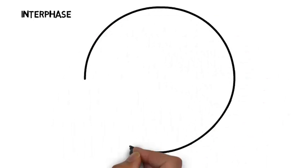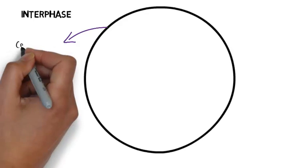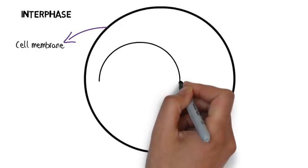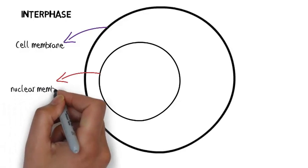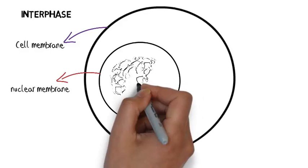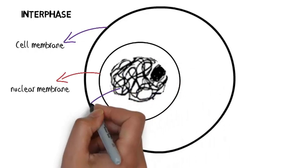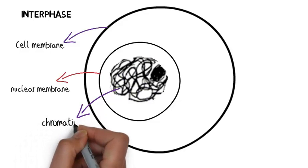The first part of mitosis is actually not specifically part of the cell division — not mitosis — but interphase. This is the time in between cell division. We can see the cell membrane being drawn and our nuclear membrane being drawn. It is within the nuclear membrane that our DNA material is stored, and we term this DNA material chromatin.